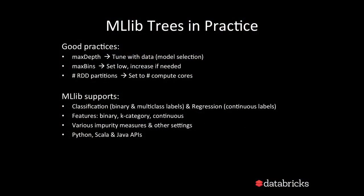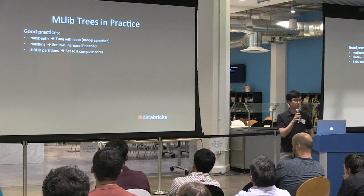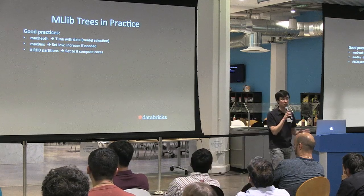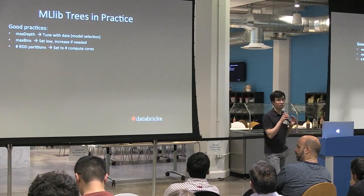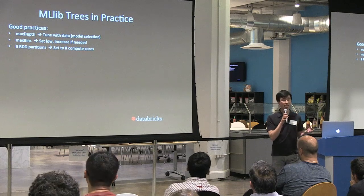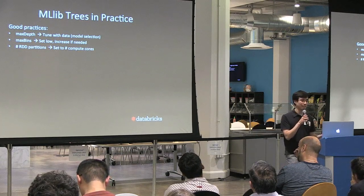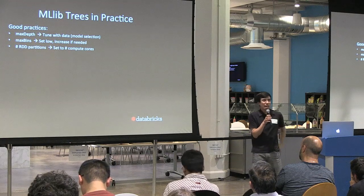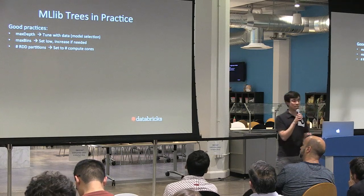In practice: max depth is important to tune based on held-out data and model selection. Max bins should generally be set low but increased if needed. One less obvious tip: the number of RDD partitions. Unlike some Spark jobs where over-partitioning helps balance uneven task times, decision tree tasks are very uniform. So it's significantly faster to set RDD partitions equal to the number of compute cores.